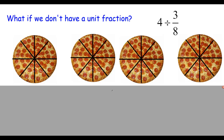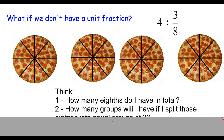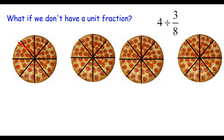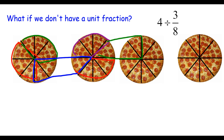What if we take four pizzas and split them into groups of three-eighths of a pizza? Each pizza is made of eight slices and we're splitting into groups of three. The same two questions apply: how many eighths do we have in total, and how many groups will we have if we split those eighths into equal groups of three? Visually, counting groups of three slices across four pizzas, we can form ten groups but can't quite make another full group — we have two-thirds of a group left over.